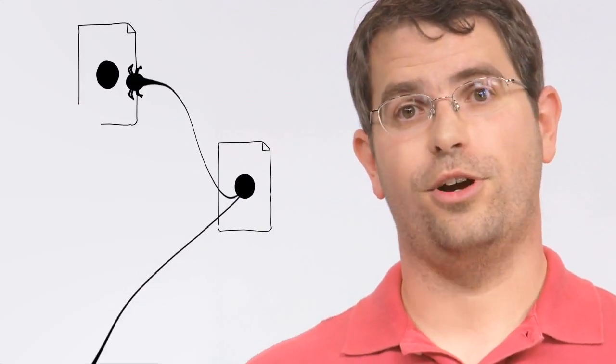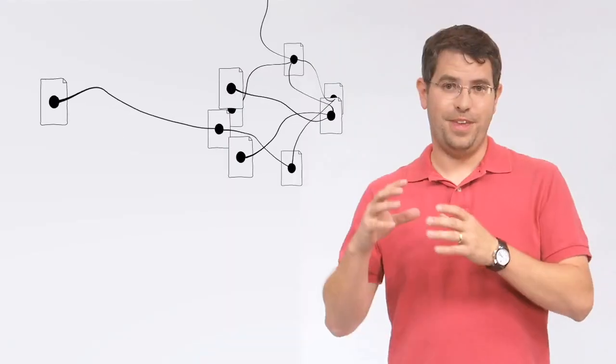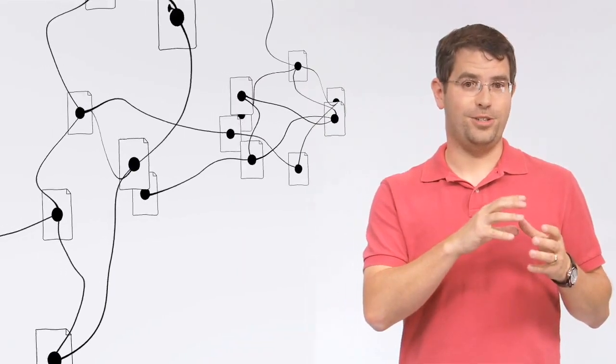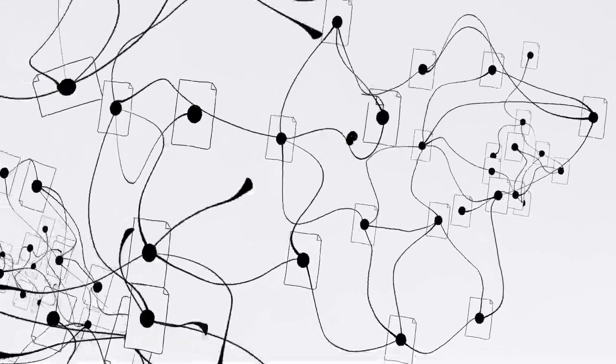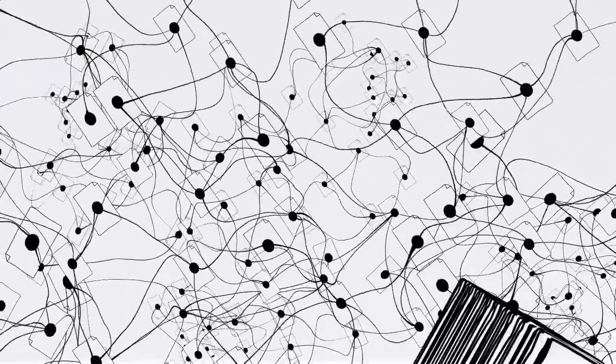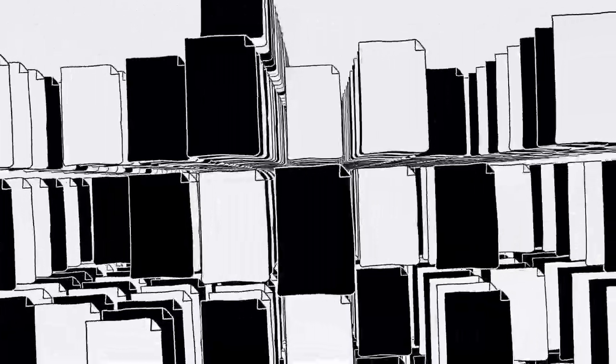We do this with software programs called spiders. Spiders start by fetching a few web pages, then they follow the links on those pages and fetch the pages they point to, and follow all the links on those pages and fetch the pages they link to, and so on, until we've indexed a pretty big chunk of the web—many billions of pages stored across thousands of machines.